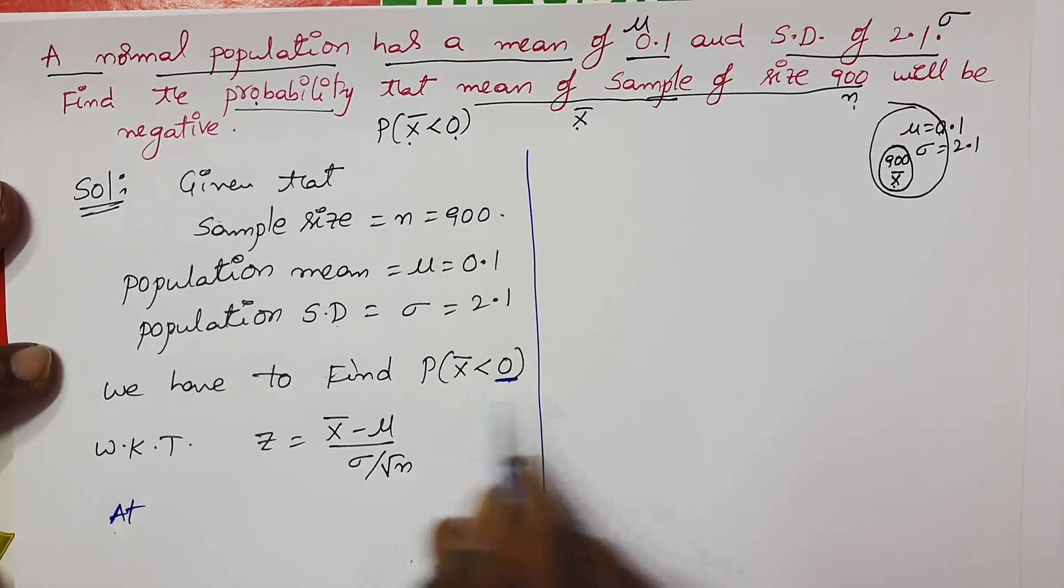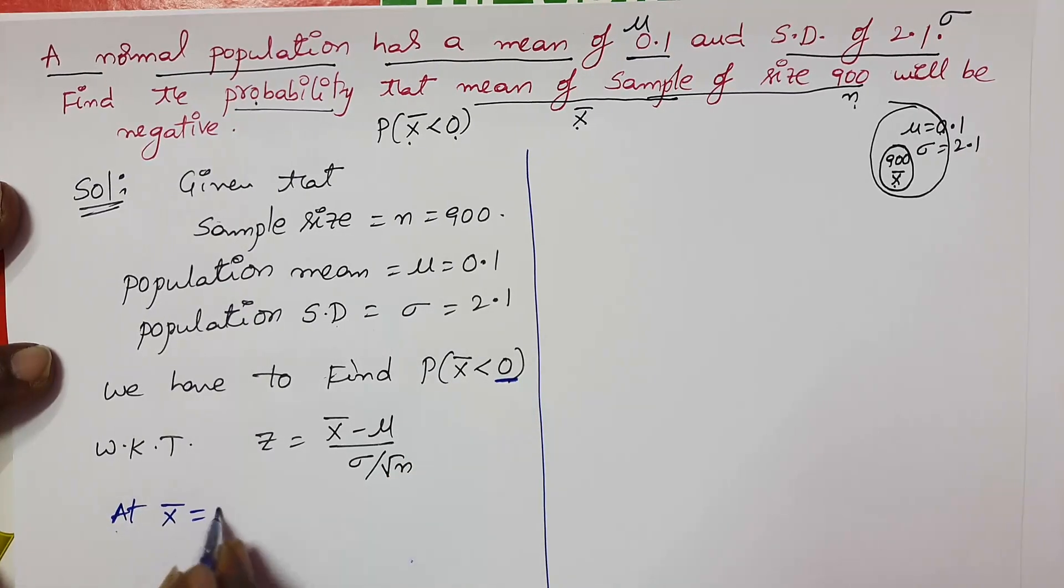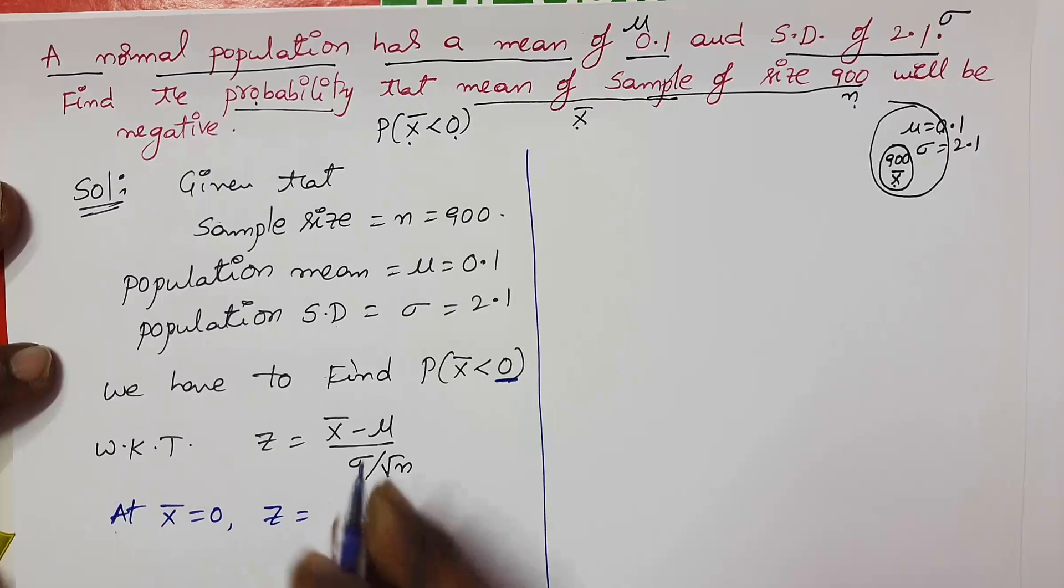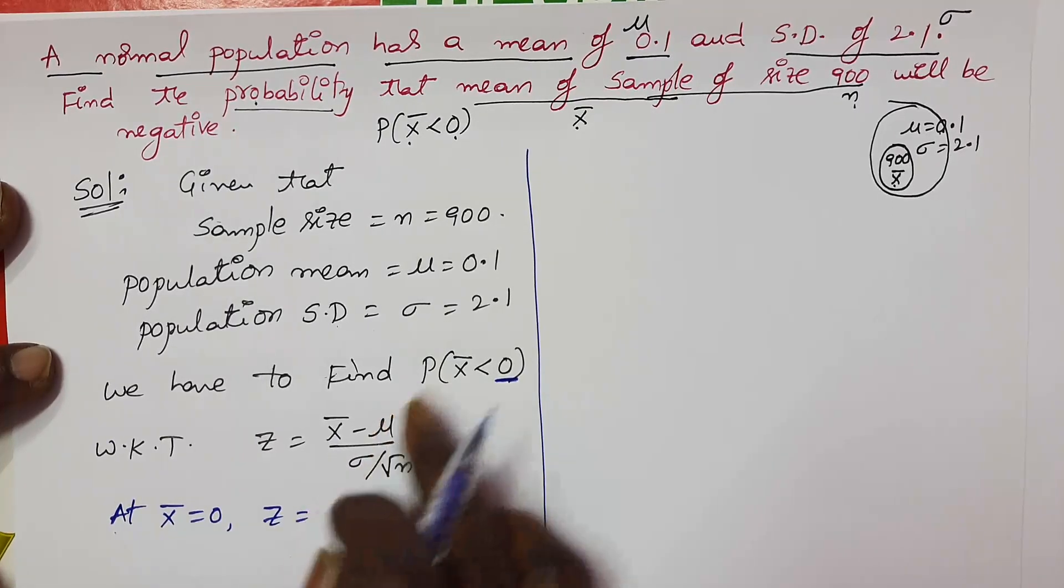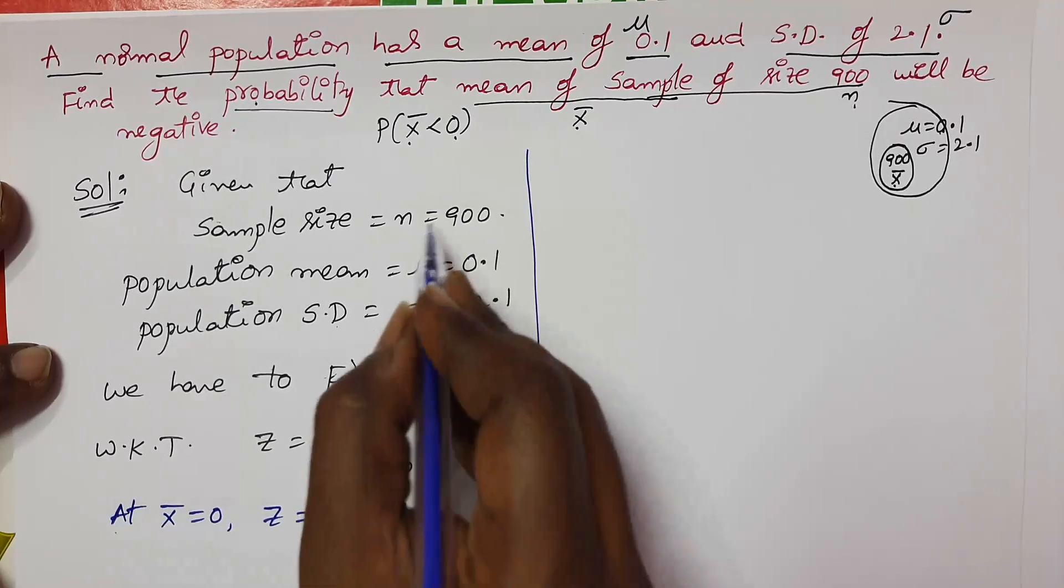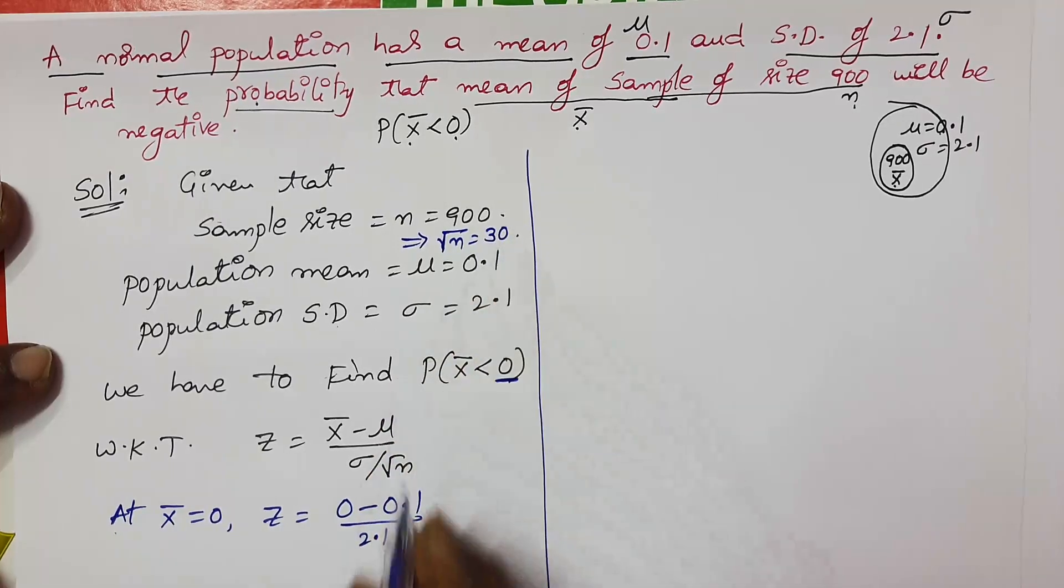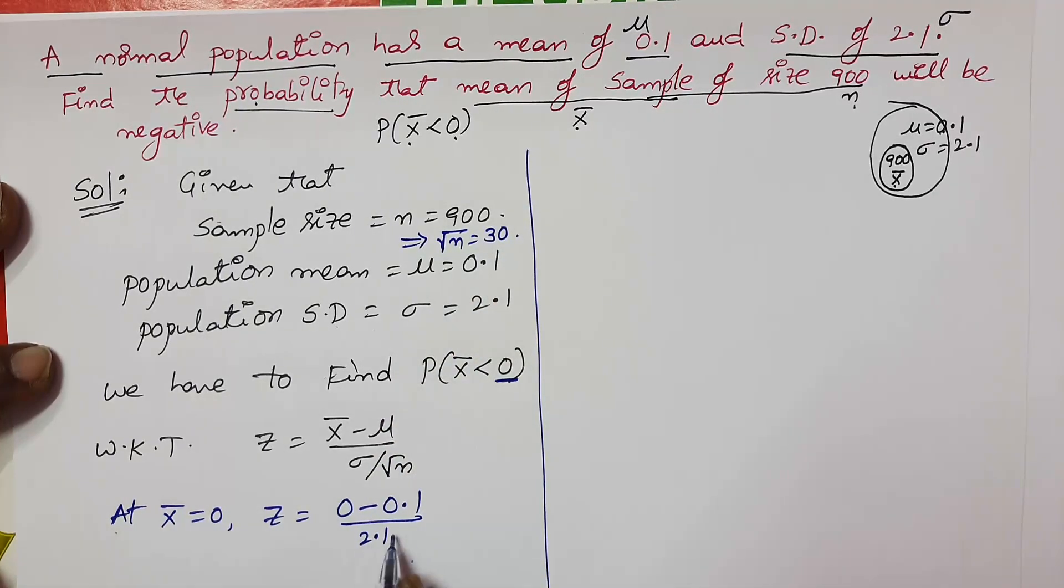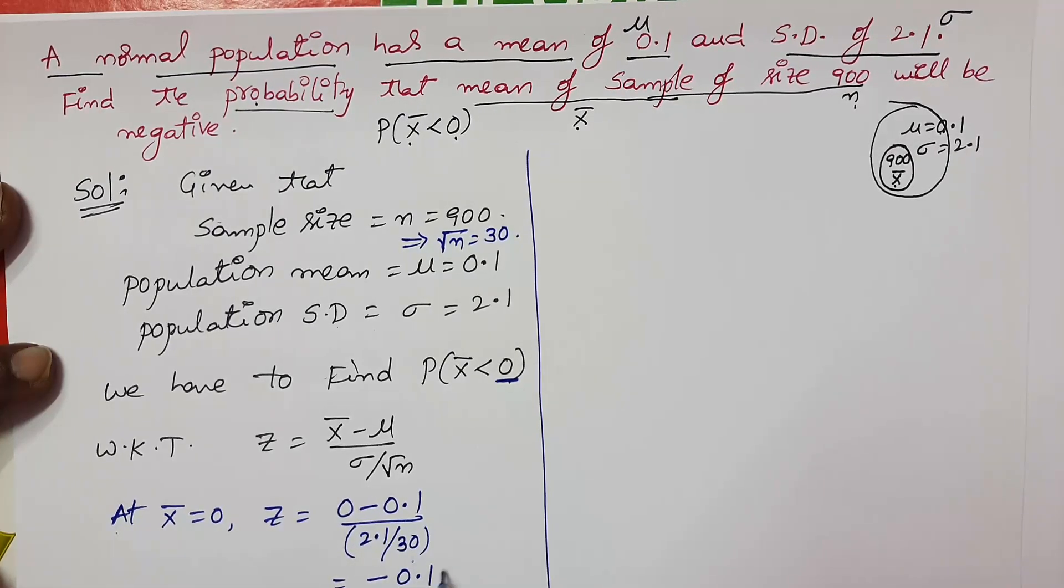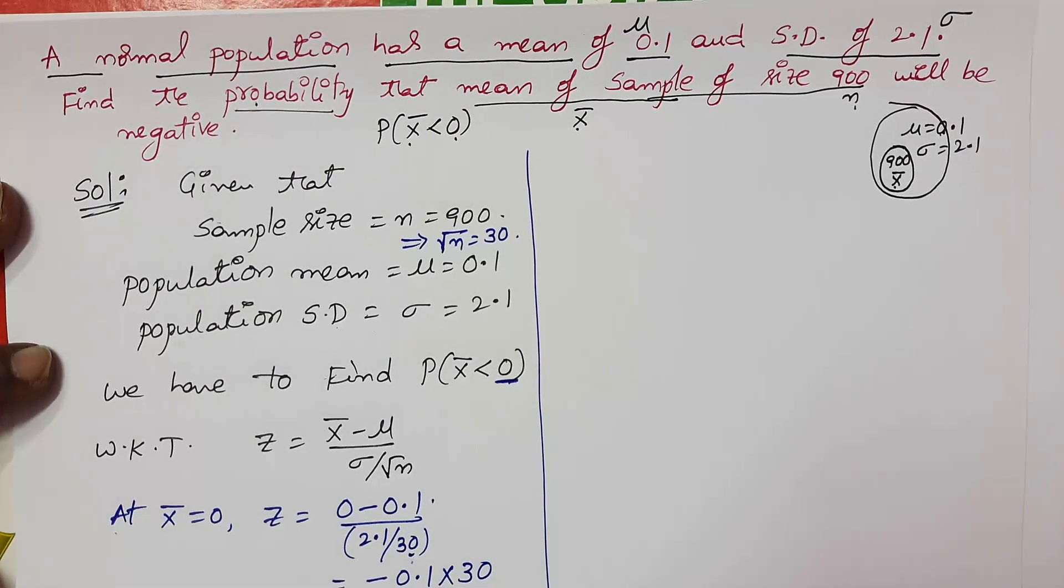At this point of x̄, we have only one end point. At this end point, you should find out the z value: 0 minus what is μ, 0.1, by 2.1 division root n. What is root n? Root over 900 is 30. So 2.1 by 30. So it is nothing but minus 0.1, shift this denominator to numerator by 2.1, so it is negative.